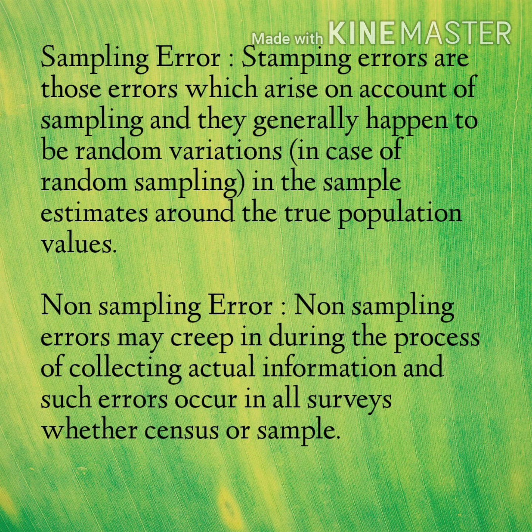Number three: mistakes in recording the data or coding it to standard classifications. Number four: pseudo opinions or false opinions given by respondents — sometimes they have no opinion and do not wish to say so. Number five: other errors in data collection, like non-responses, processing errors, or imputation of values for missing or inconsistent data.